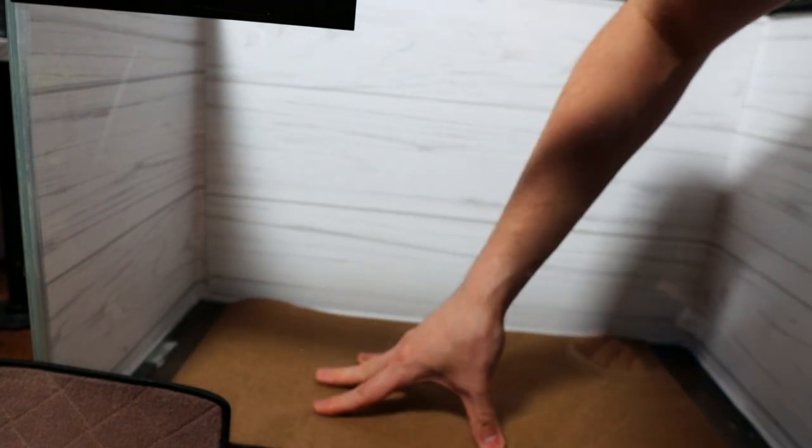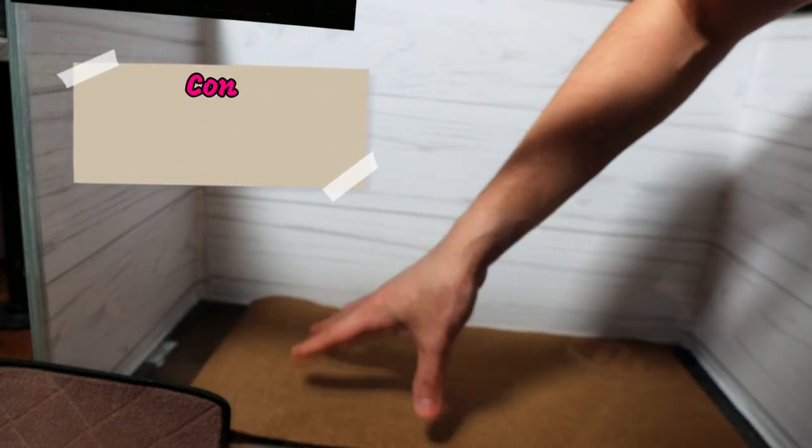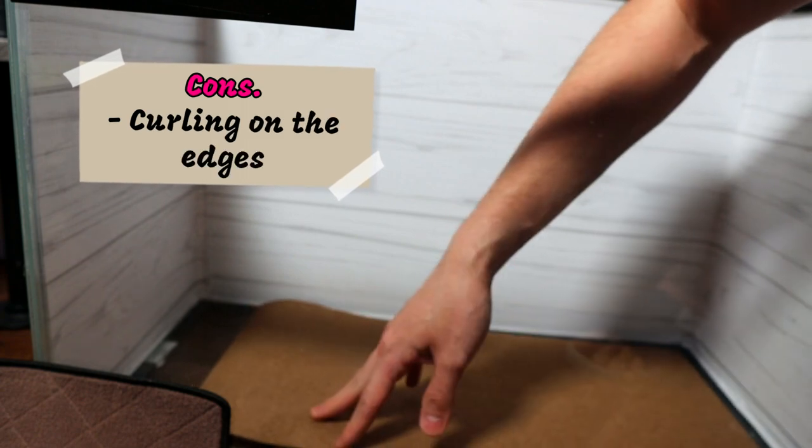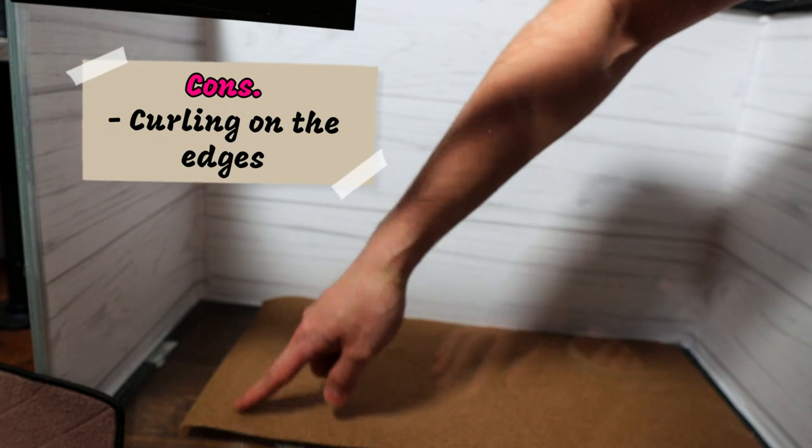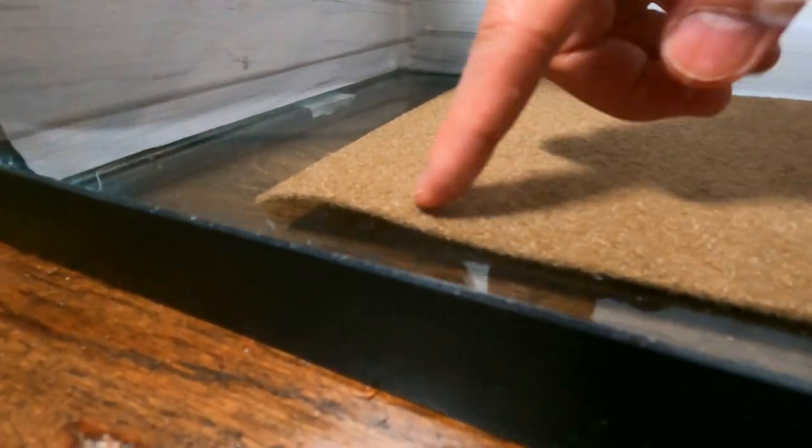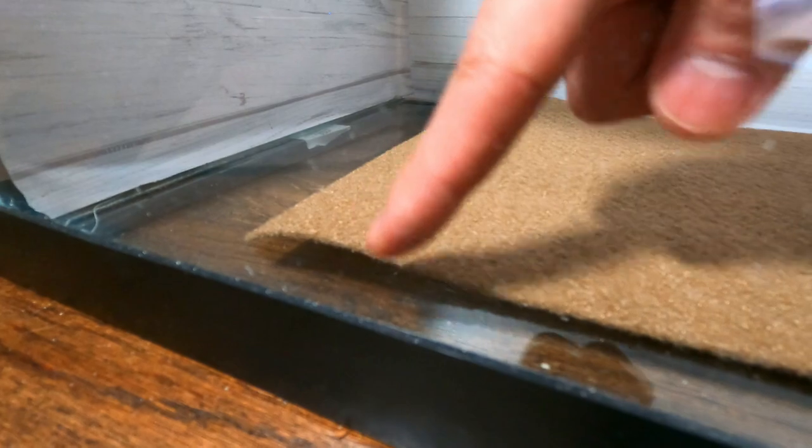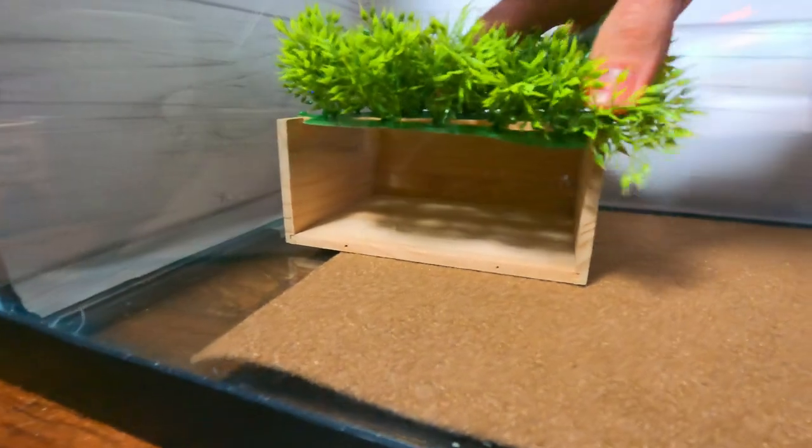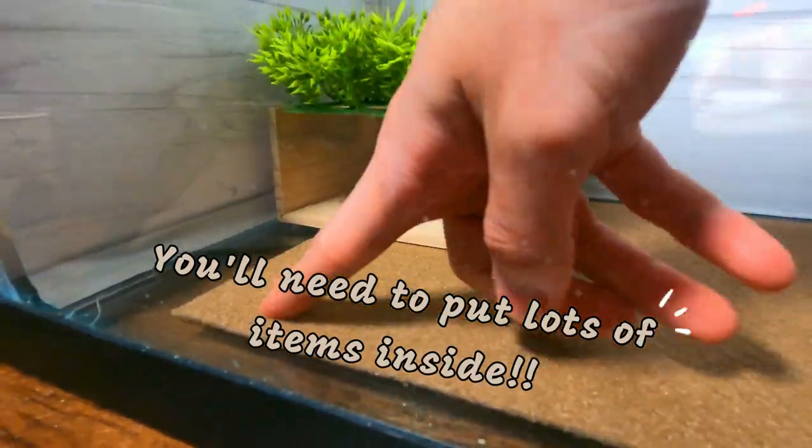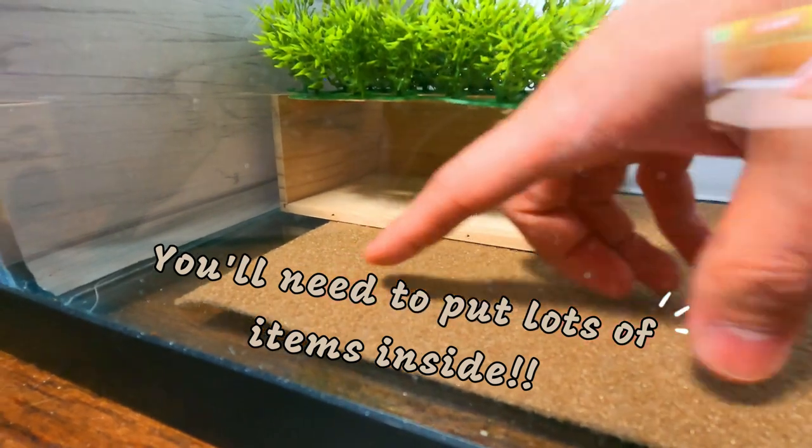Another thing about this one is when you put this in the tank you will see a little bit of wrinkling. As you can see, this part right here is a little bit wrinkled. So what you've got to do when you have these types of carpets is put heavy items right here above so that these wrinkles can go away.